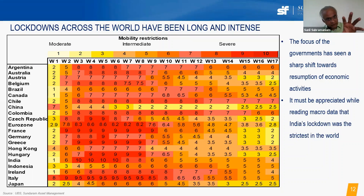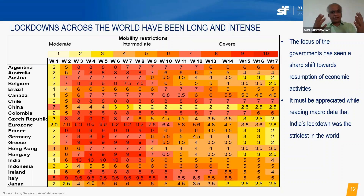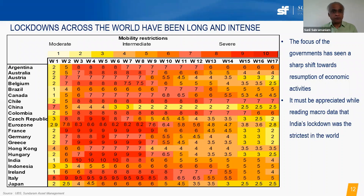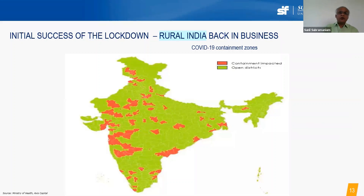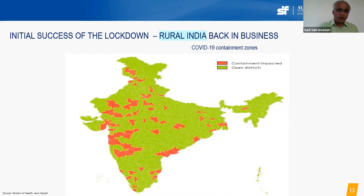Our country suffered three negative impacts: first, a longer-term slowdown caused by the NBFC crisis and other factors; second, the COVID crisis; third, the lockdown with the most severe global response. However, the strict lockdown helped contain the contagion within urban areas, allowing rural India to get back to business. Across the world, the impact of COVID and lockdowns led to massive GDP declines, with double-digit negatives everywhere except China, which had already passed this phase three months earlier.